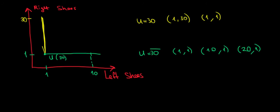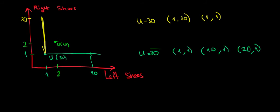Let's give another example on this graph. What if we have two left shoes and two right shoes — that makes two pairs. Because we usually like to change our shoes for fashion, having two pairs makes us feel better, so we'd have a higher utility. Higher utility corresponds to a higher indifference curve — let's say utility is 40. The same logic applies: no matter how many more left or right shoes we add beyond the matched pair, the utility stays at 40.